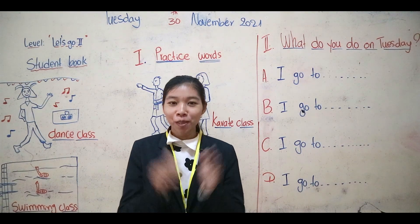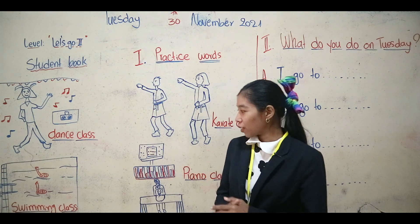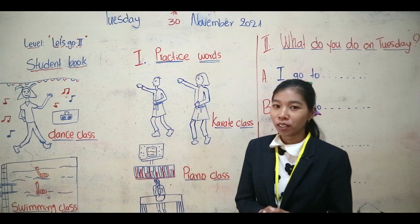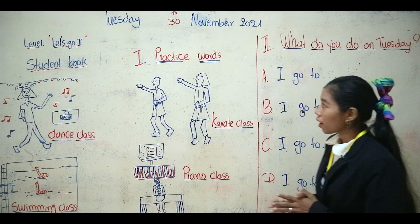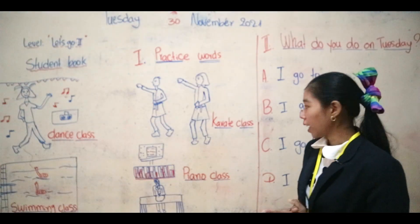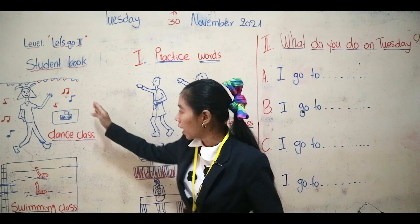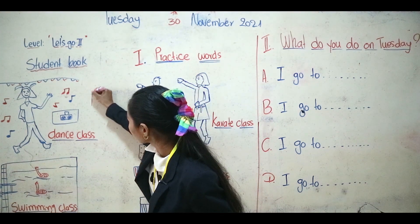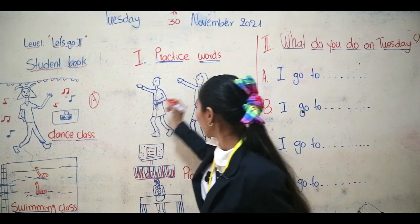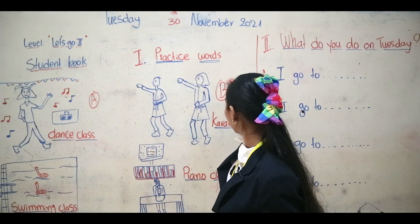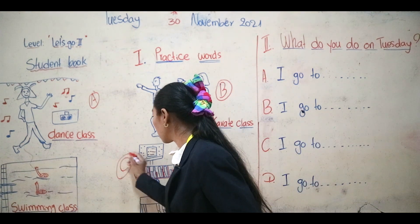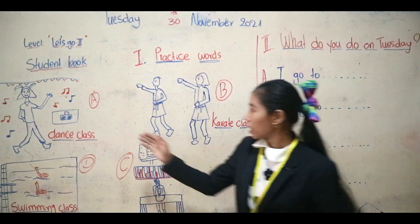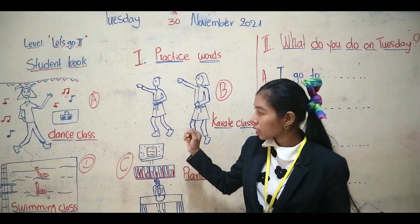Hello everyone, welcome back. Today I have a special picture for you and special words. You can see a beautiful picture on the whiteboard. So today we will practice words first. Everyone, we have picture A, picture B, picture C, and picture D.